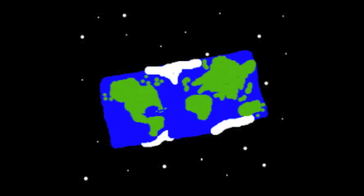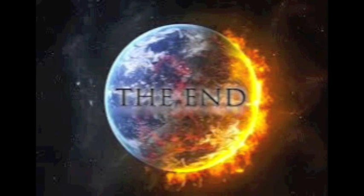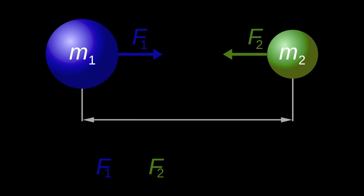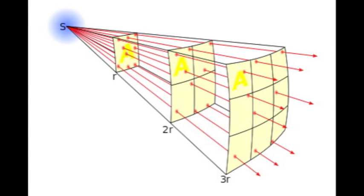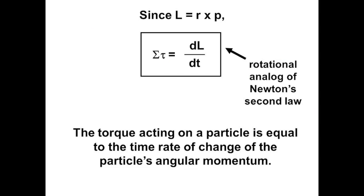You see, that would change its moment of inertia, which would change its orbit, and there'd be no more Earth. With universal laws of gravitation, we have a good foundation. Thank the inverse square law — it's how we live.